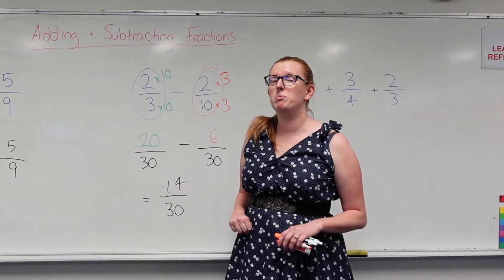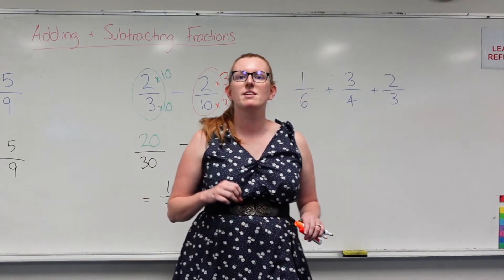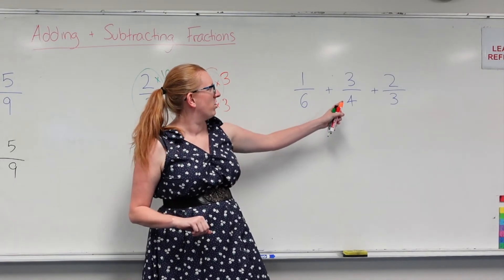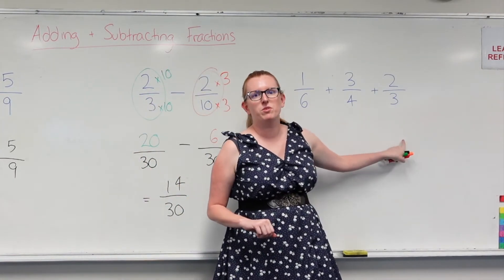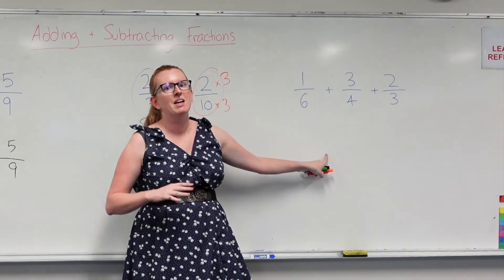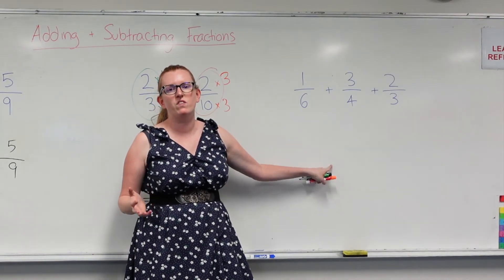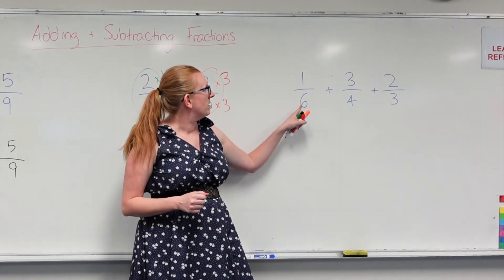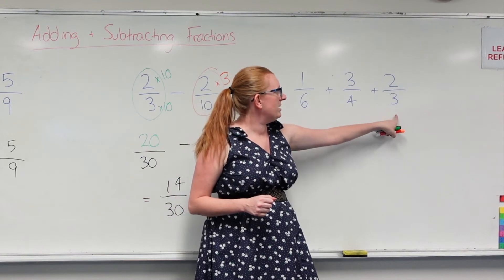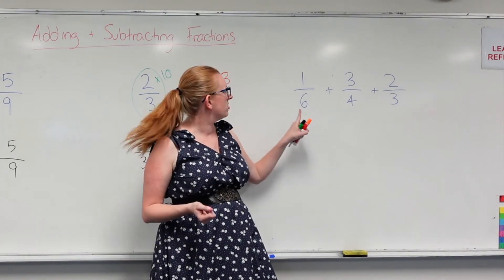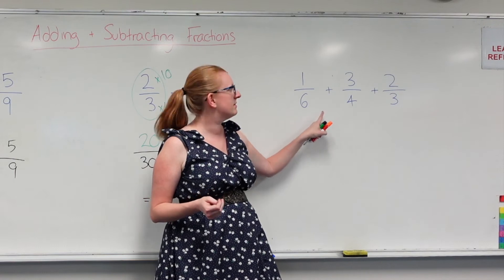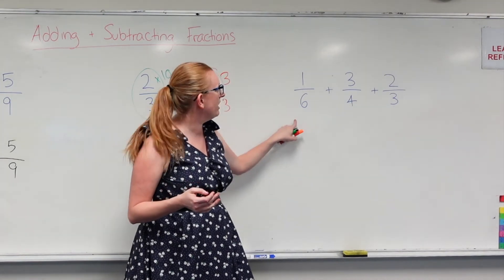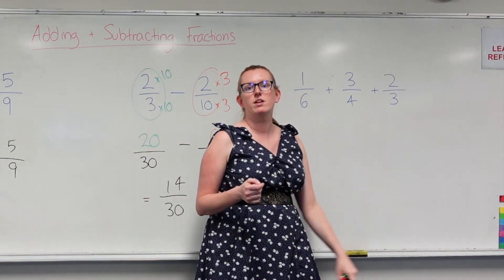Now, because I'm feeling super brave, let's try one that has three fractions all with different denominators. So here I've got 1 over 6, 3 over 4, and 2 over 3. So I've got three different denominators. Same deal — I need to find a magic number that all three numbers fit inside. So 6, 4, and 3: the best number I can think of is 12, because 6 goes into 12 twice, 4 goes into 12 three times, and 3 goes into 12 four times. So I'm going to turn each of these into fractions that have 12 as a denominator.